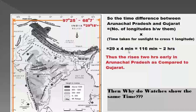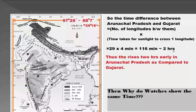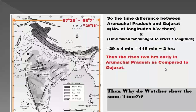So if we multiply 30 longitudes by 4 minutes, we get 2 hours. Thus the sun rises 2 hours earlier in Arunachal Pradesh as compared to Gujarat.